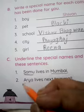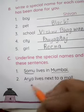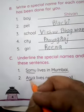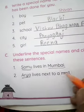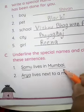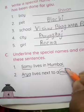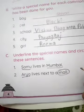Next: Arya lives next to a mall. So Arya is a special name — underline. Mall is a common name — circle it.